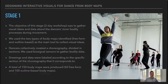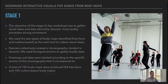Stage 1. The objective of this 2-day workshop was to gather visual ideas and data about the dancers' inner bodily processes during movement. We used two types of body maps — freeform and outline-based — as the main tool to collect visual ideas. Dancers collectively created a choreography divided in sections. We used biosignal sensors to gather bodily data. Drawings and data were labelled according to the specific section of the choreography. A total of 150 body maps were produced: 50 freeform and 100 outline-based.